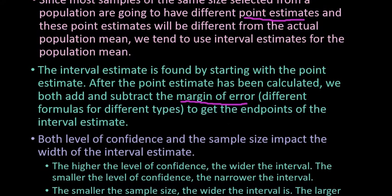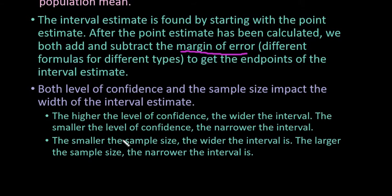There are two things that will impact the size of your interval estimate: the level of confidence and the sample size. The level of confidence tells us approximately how many of our interval estimates will actually contain the true population mean. If I'm running a 95% confidence interval, that means 95% of the samples that I pull from that population will actually contain the true population mean in my interval estimate. That means 5% of them will not.